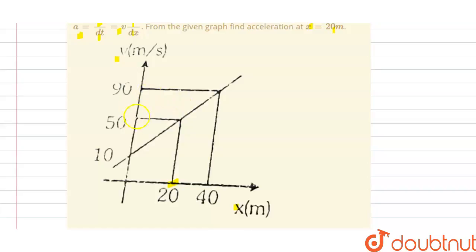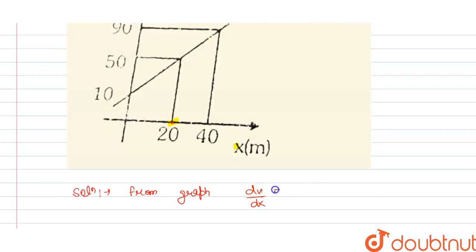So velocity change is 90 minus 50, so we can write this is 90 minus 50, and we have the distance change is 40 minus 20. That is 40 divided by 20.